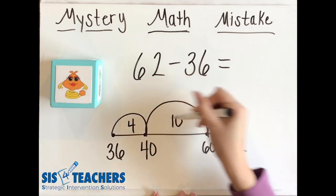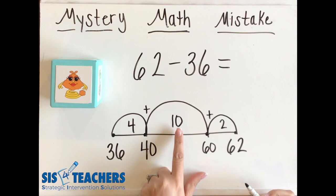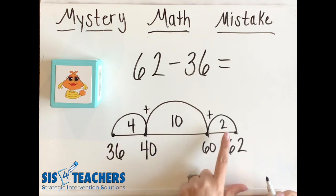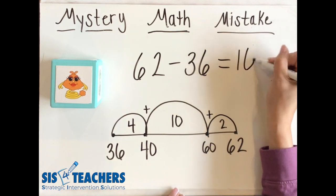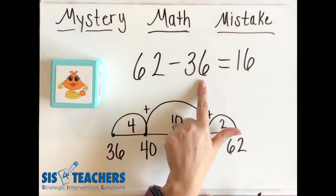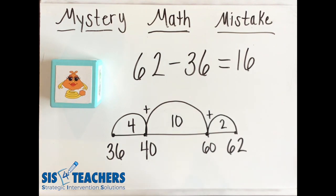Springling likes to add how far her hops are. So I'm going to add my 10 plus my 4 plus my 2 and I know that that equals 16. So the distance between 62 and 36 I think is 16.